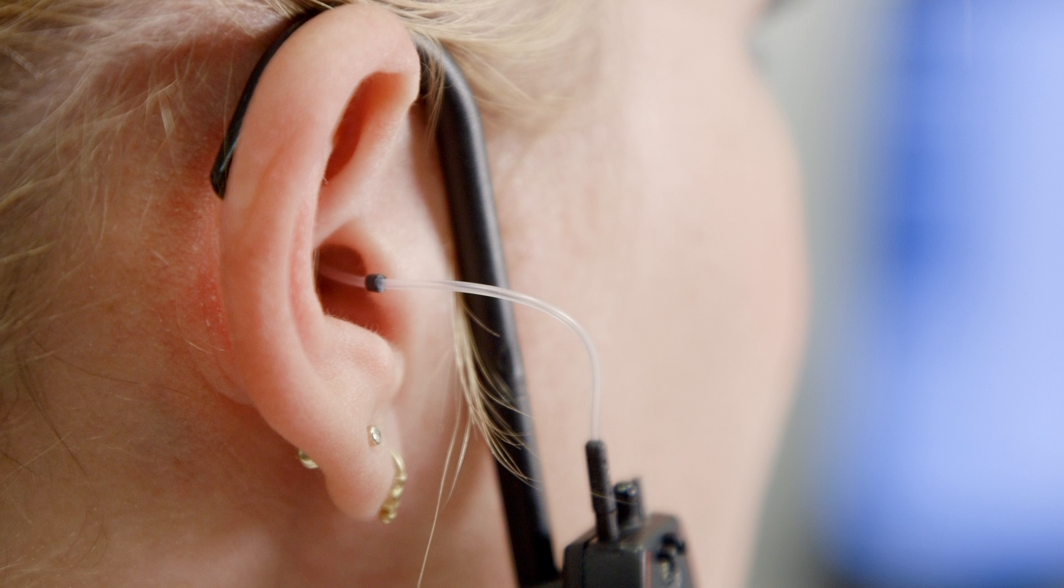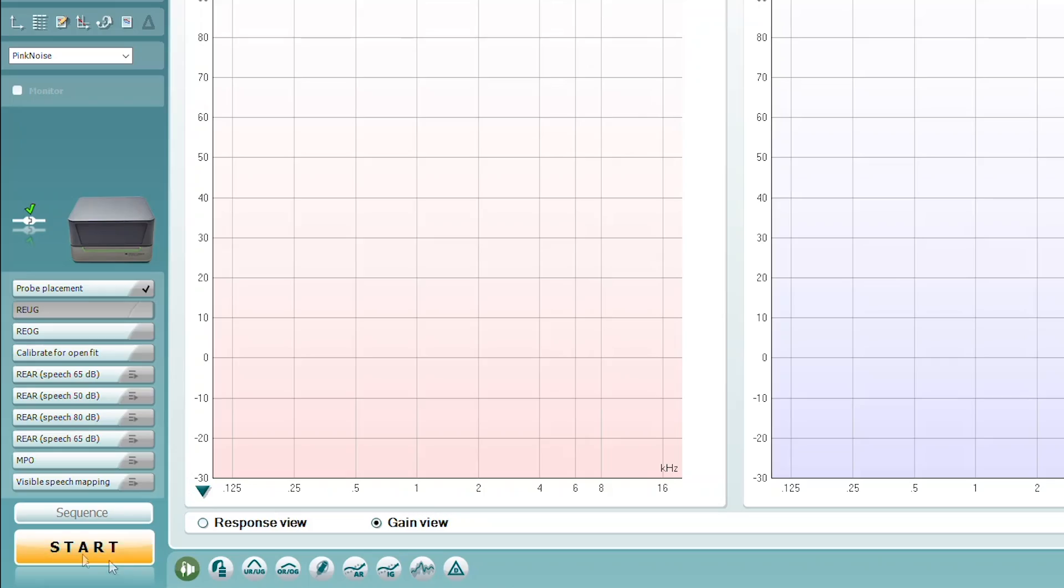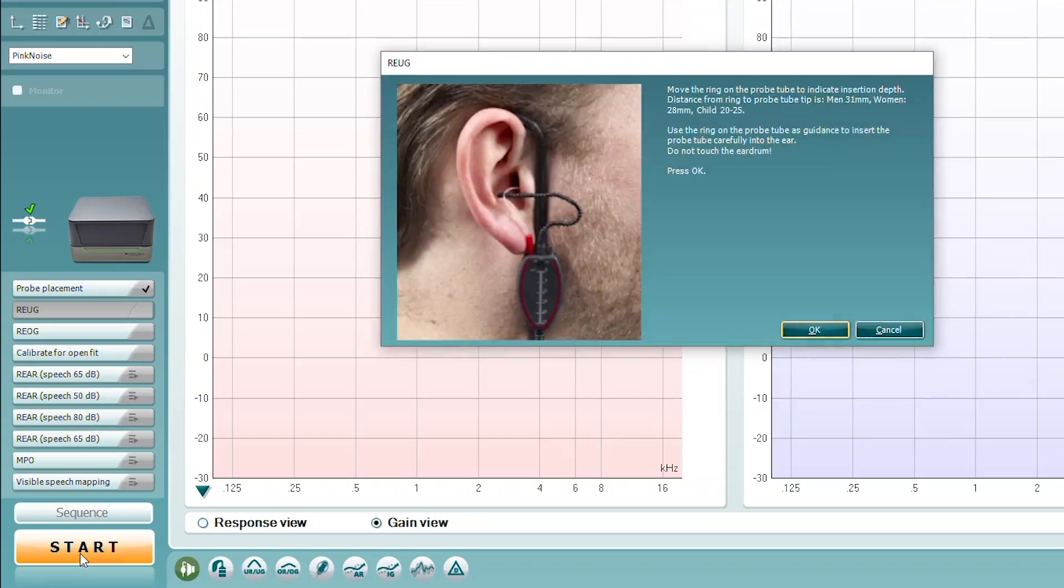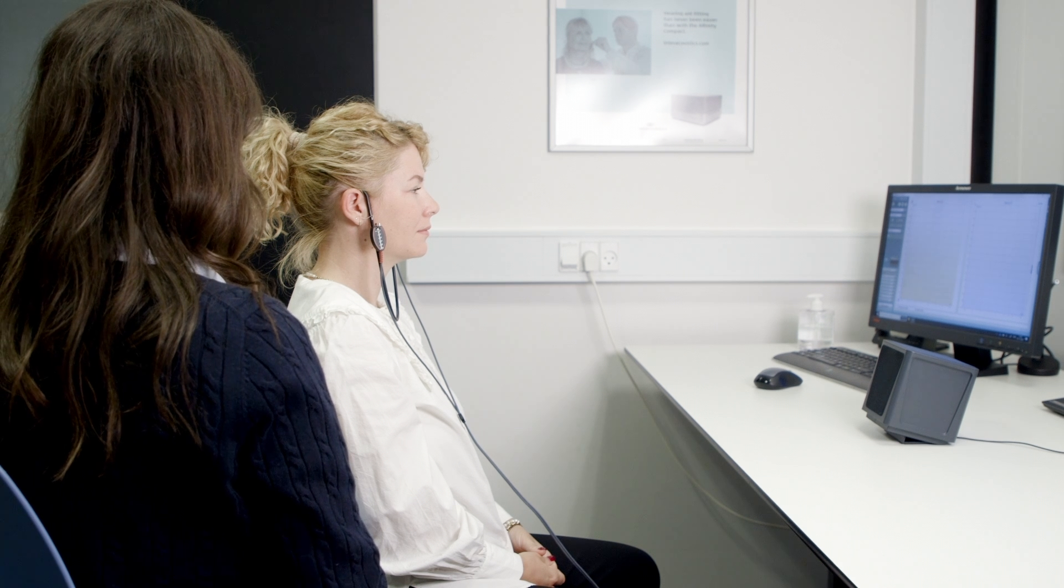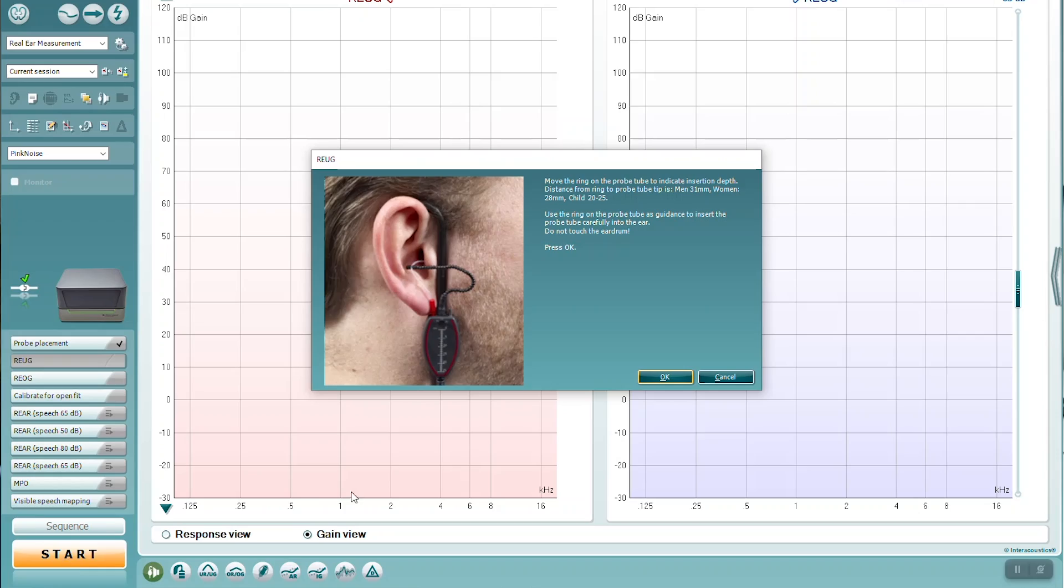When the probe tube is inserted, you can run the real ear unaided gain test to see whether the probe tube is at the correct depth. Place your client in front of the speaker with the REM equipment on and run the test.